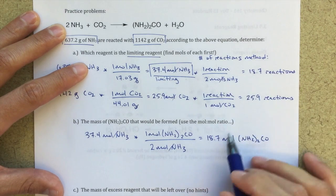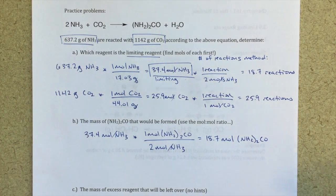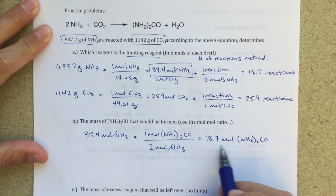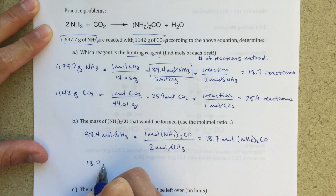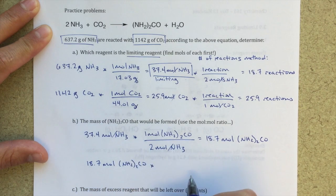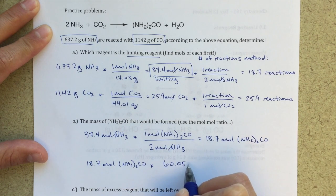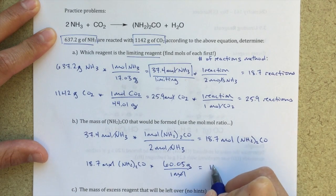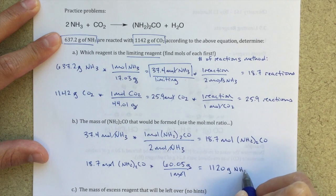You might notice that it's a similar number, right? That's just going to happen sometimes with these mole-to-mole ratios being what they are. It shouldn't freak you out or anything like that. The last step here is to convert from moles into grams. So I've got my quantity of product, 18.7 moles of NH2CO. And I'm going to convert that into grams. If I add all of this up, find the molecular mass, I got 60.05 grams per one mole. Units of moles will cancel, and I'll be left with 1,120 grams of my product.